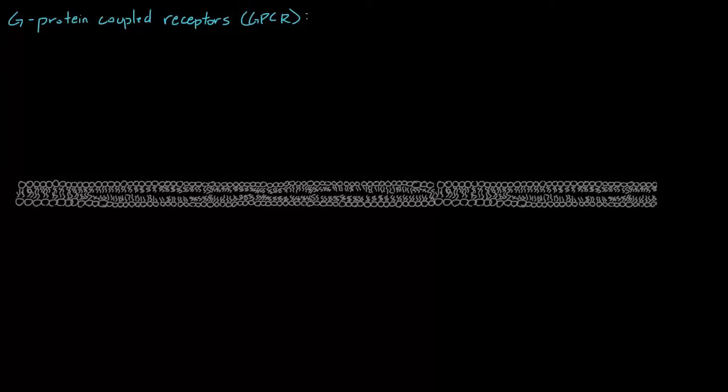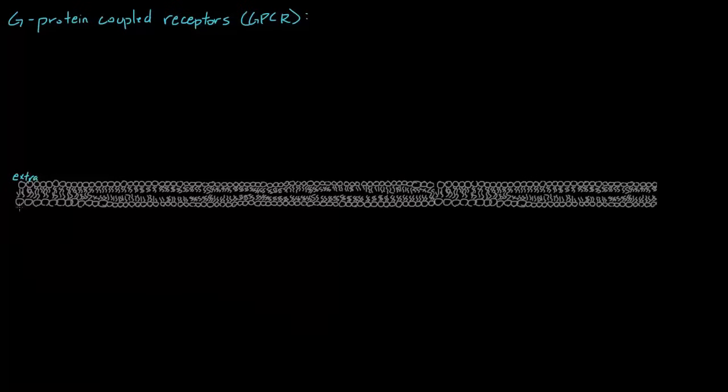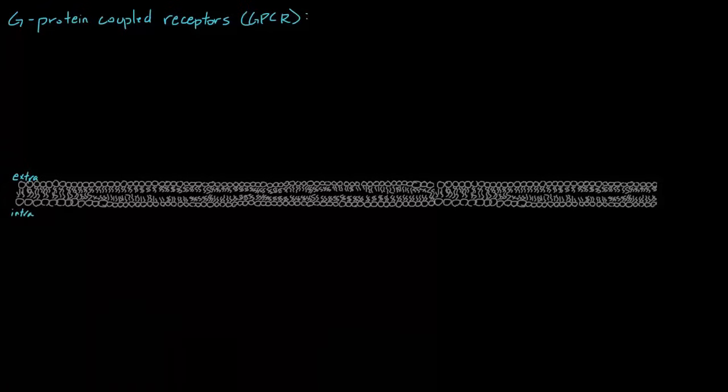The most important characteristic of GPCRs is that they have seven transmembrane alpha helices. If we have this being our cell membrane, and we have this being the extracellular side, and this being the intracellular side, if we have a GPCR, a G-protein-coupled receptor, it'll span this membrane seven times.